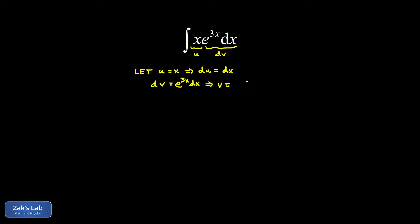Okay, and then v is given by the antiderivative of this. So the antiderivative of e to the 3x is found just using a quick chain rule backwards approach. That's 1 third e to the 3x.